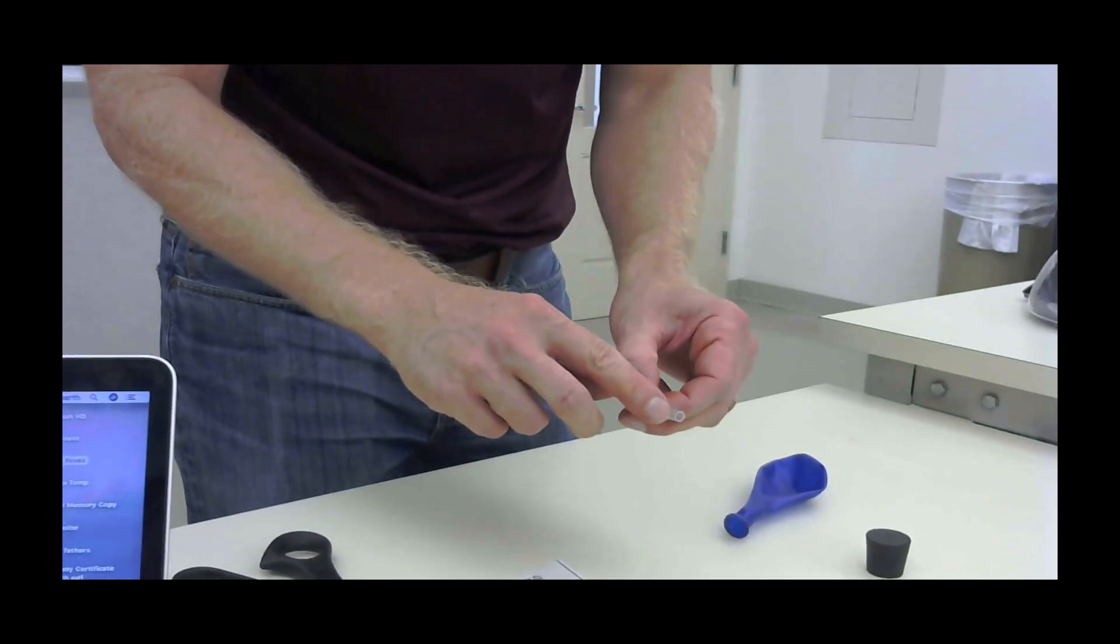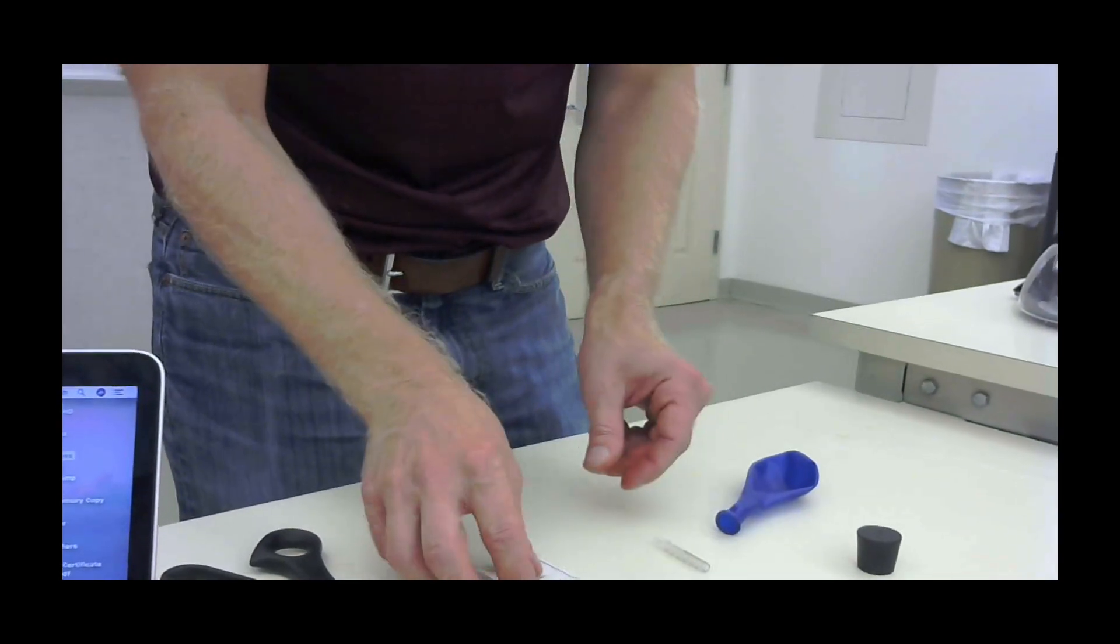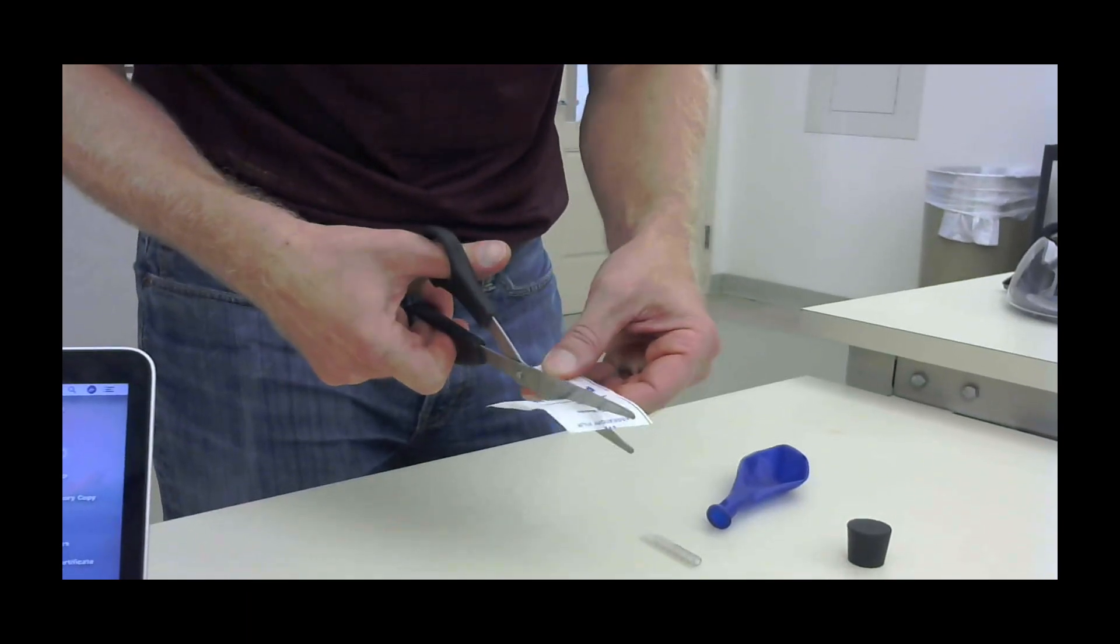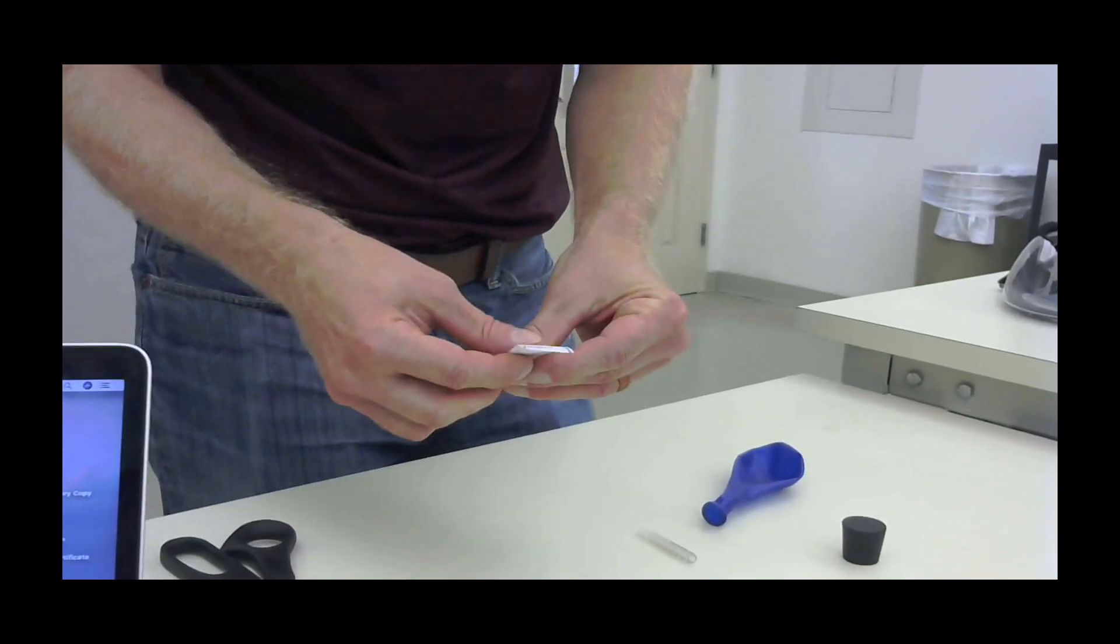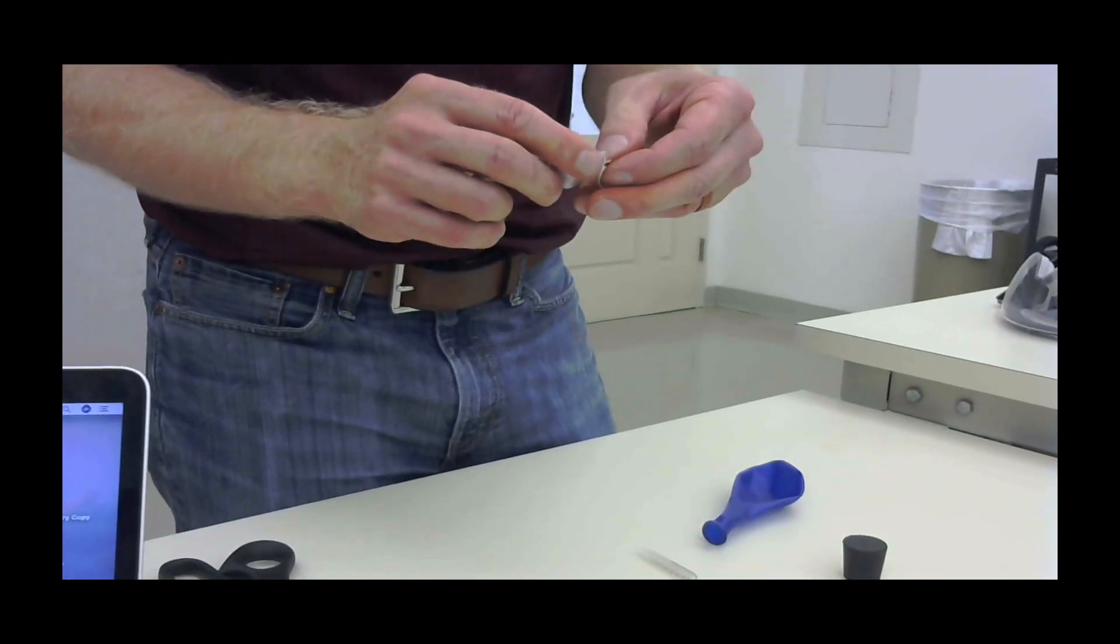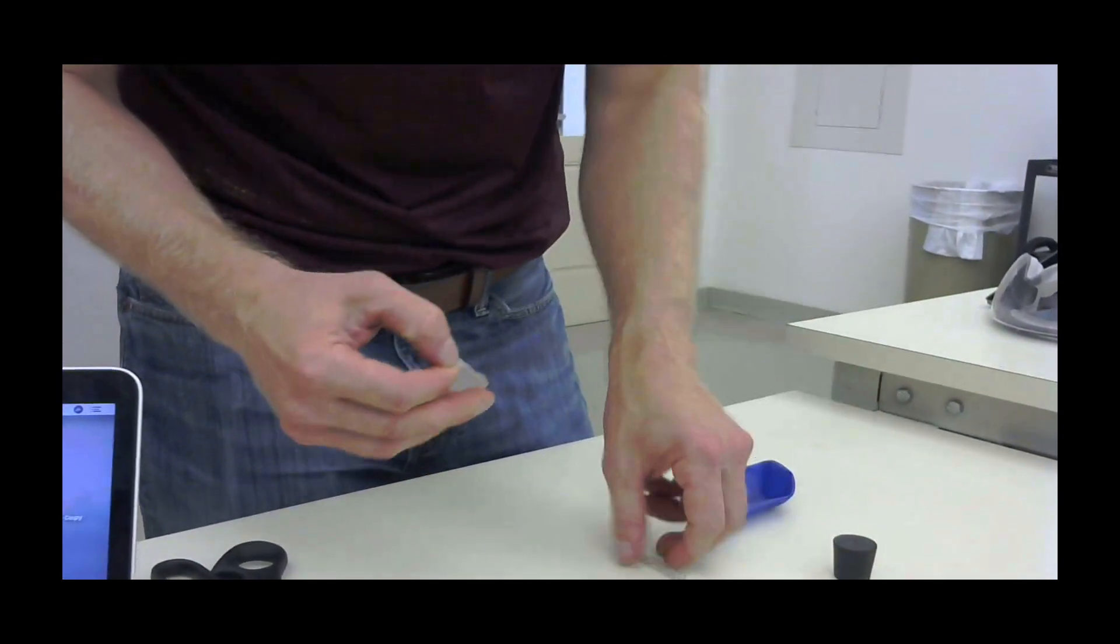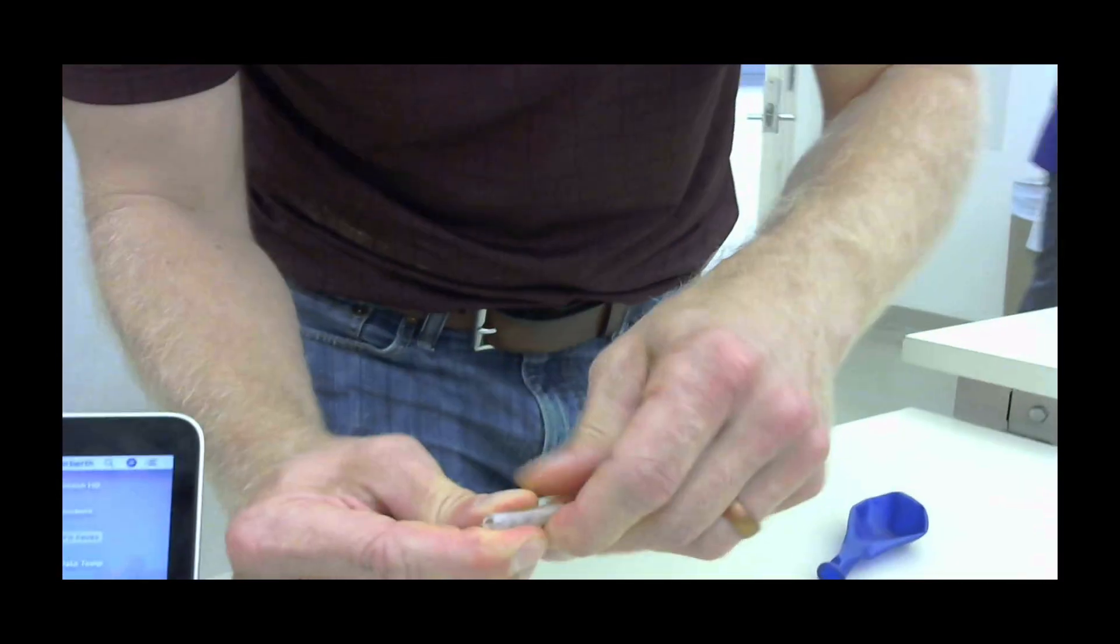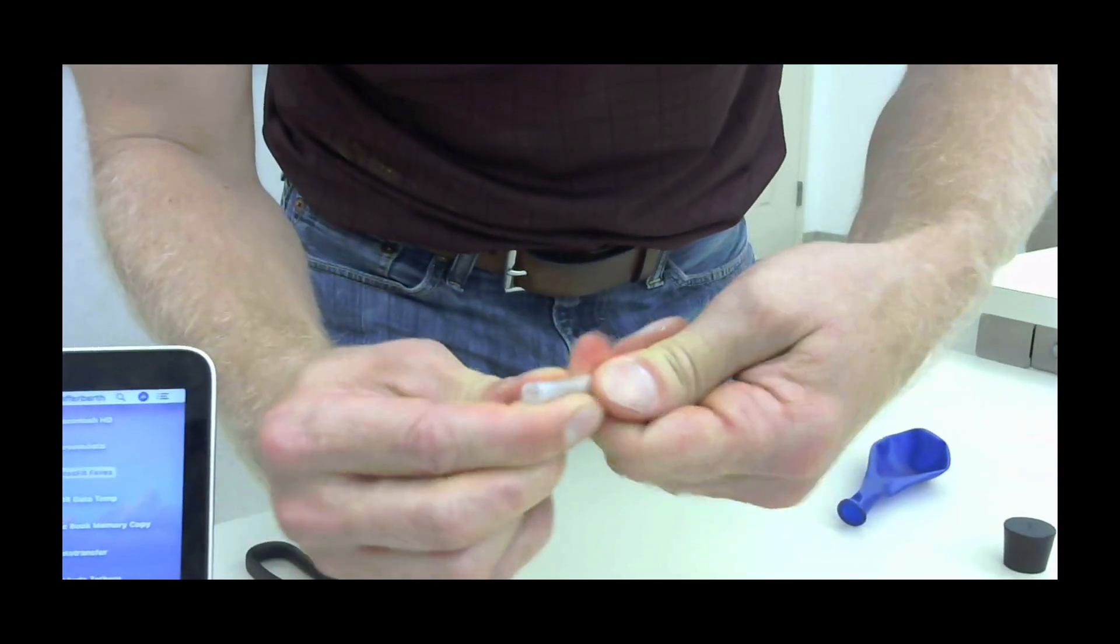Now what I want to do is create a seal between that syringe barrel and that rubber tubing. So I'm going to take my two inch strip of parafilm and I'm going to cut it into two strips. The first strip, after I take off the backing, I'm going to wrap tightly around the syringe barrel. Take several laps around.